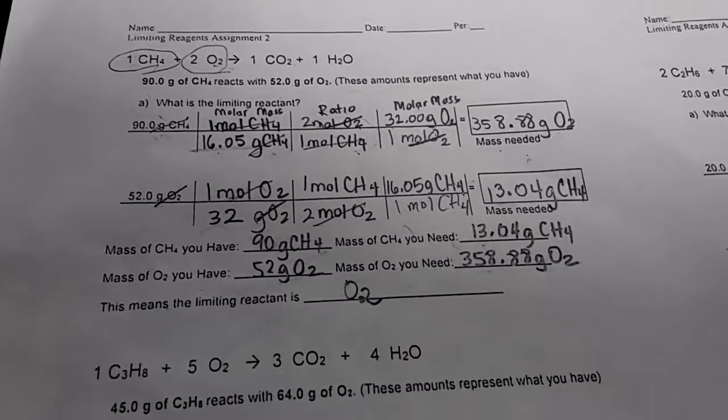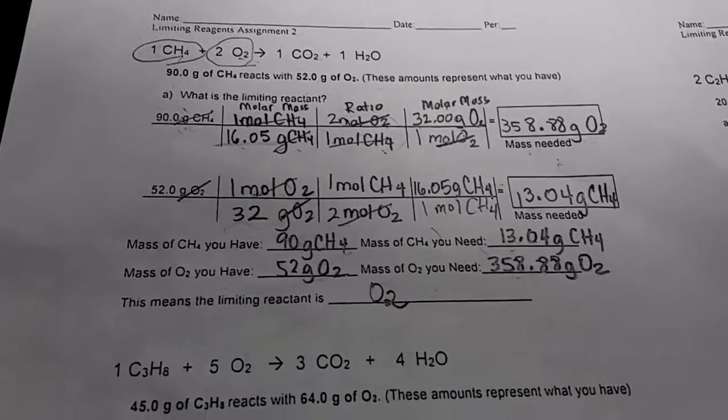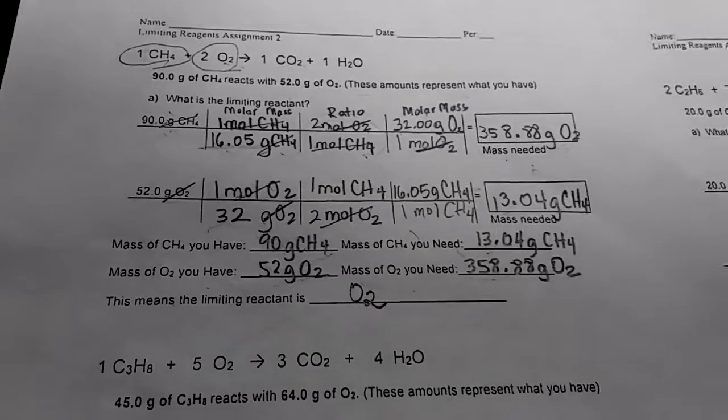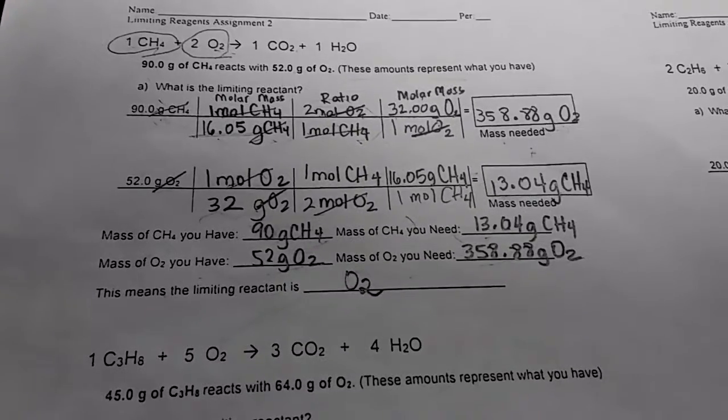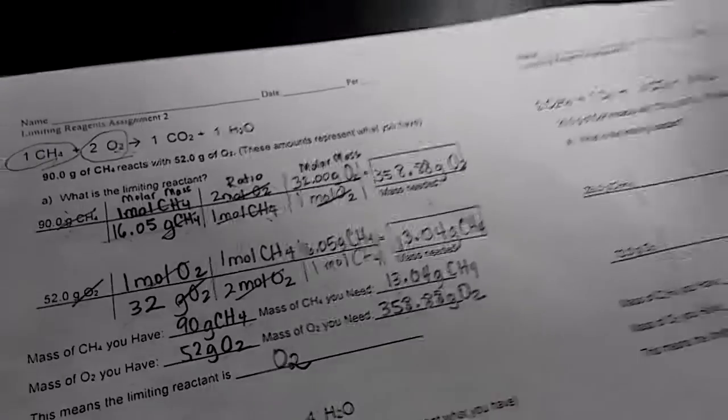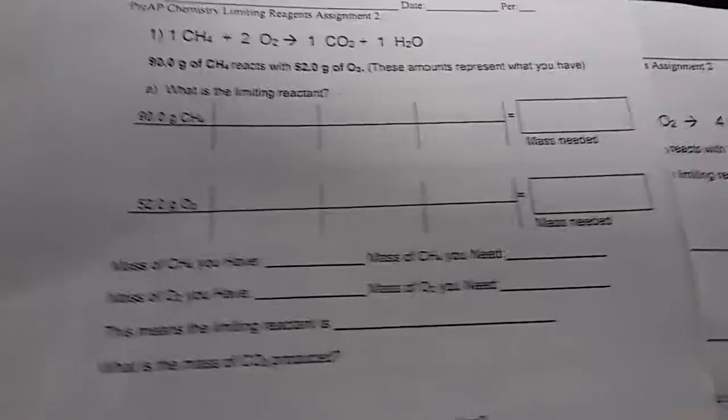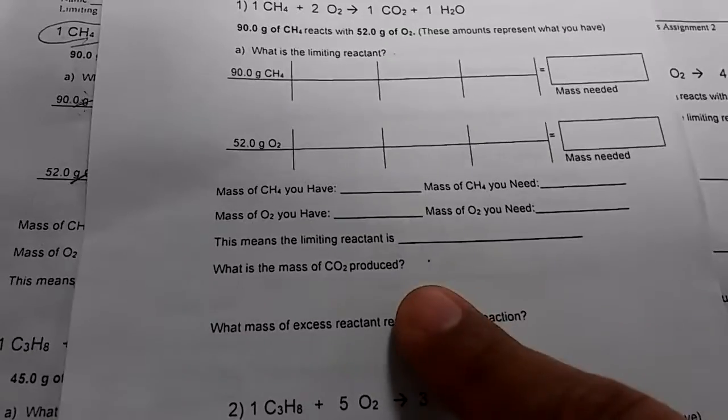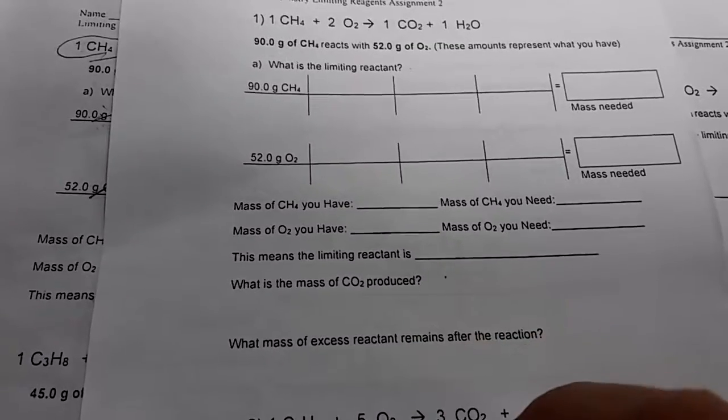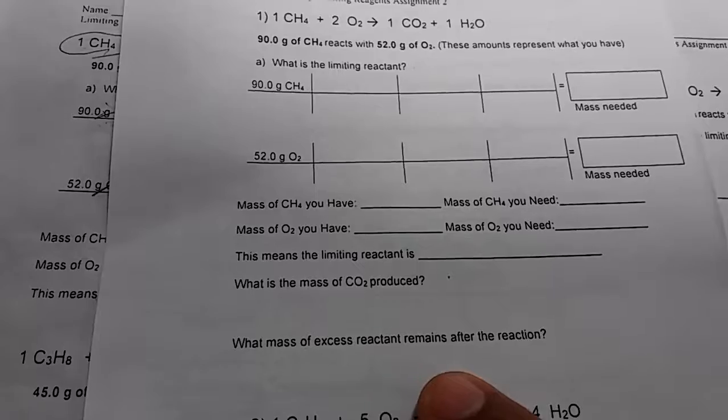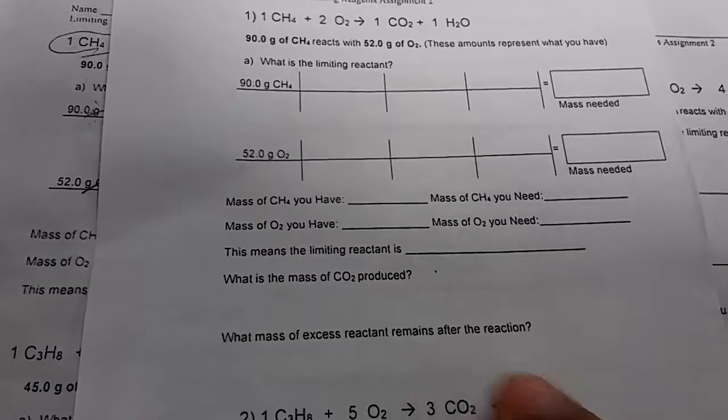Part 2 of your limiting reagents problem. This is the extension to what you can find out as soon as you know what your limit is. In your case, for you guys, you're going to want to find out the following: what mass of CO2 is produced, and what mass of excess reactant remains after the reaction.